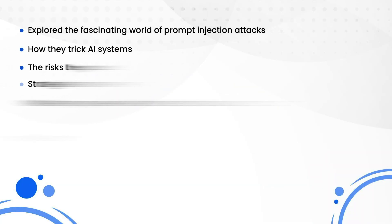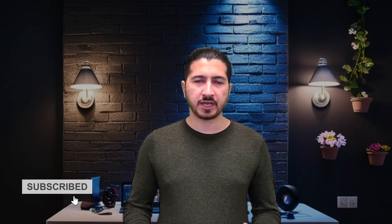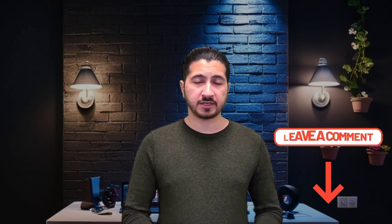So let's wrap this up. We've explored the fascinating world of prompt injection attacks — how they trick AI systems, the risks they pose, and what we can do to prevent them. These attacks may seem like a niche technical issue, but they have real-world implications, from leaking sensitive information to spreading misinformation. The key takeaway: while AI systems are incredibly powerful, they're not invincible. It's up to developers, organizations, and even users like us to stay informed and proactive in addressing these challenges. If you found this video helpful, give it a thumbs up and subscribe for more insights into AI, tech, and cybersecurity. Have questions or thoughts? Drop them in the comments below — I'd love to hear from you. Thanks for watching and I'll see you in the next one.